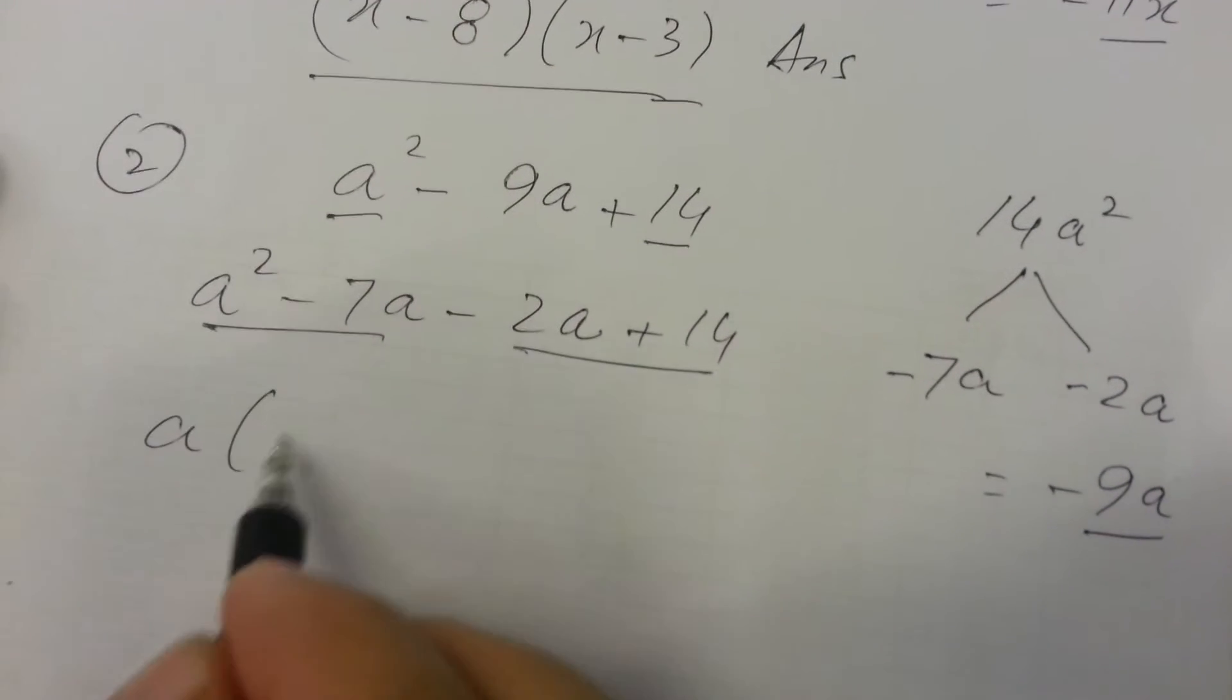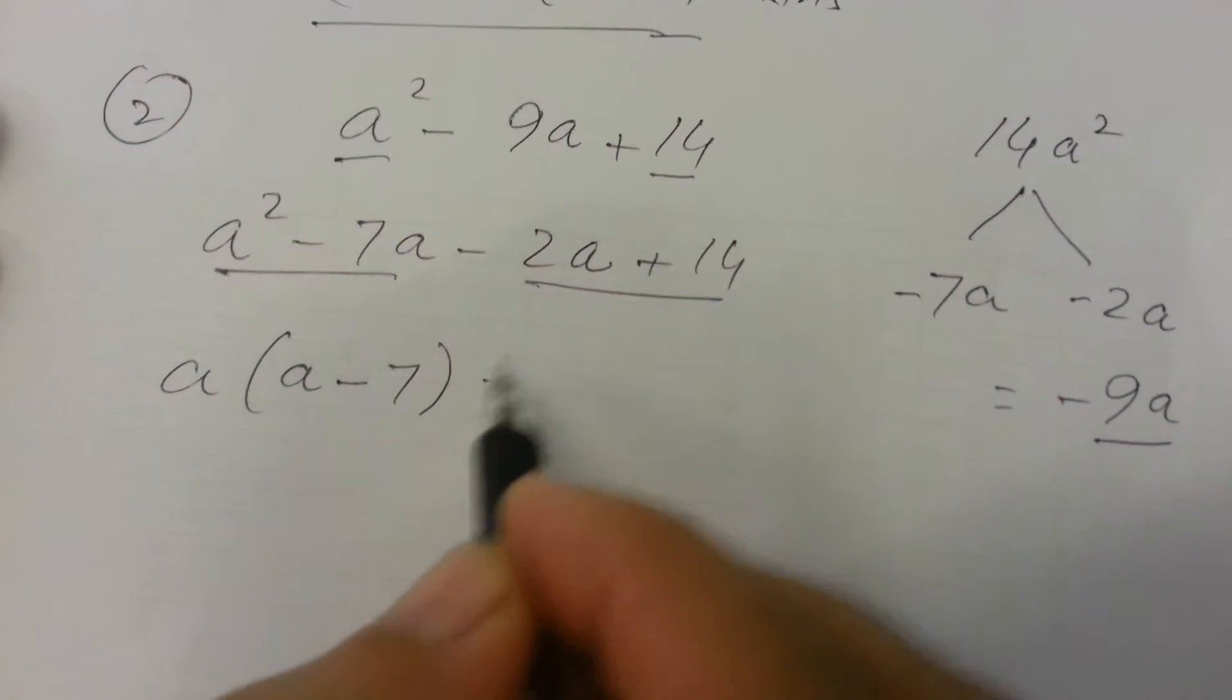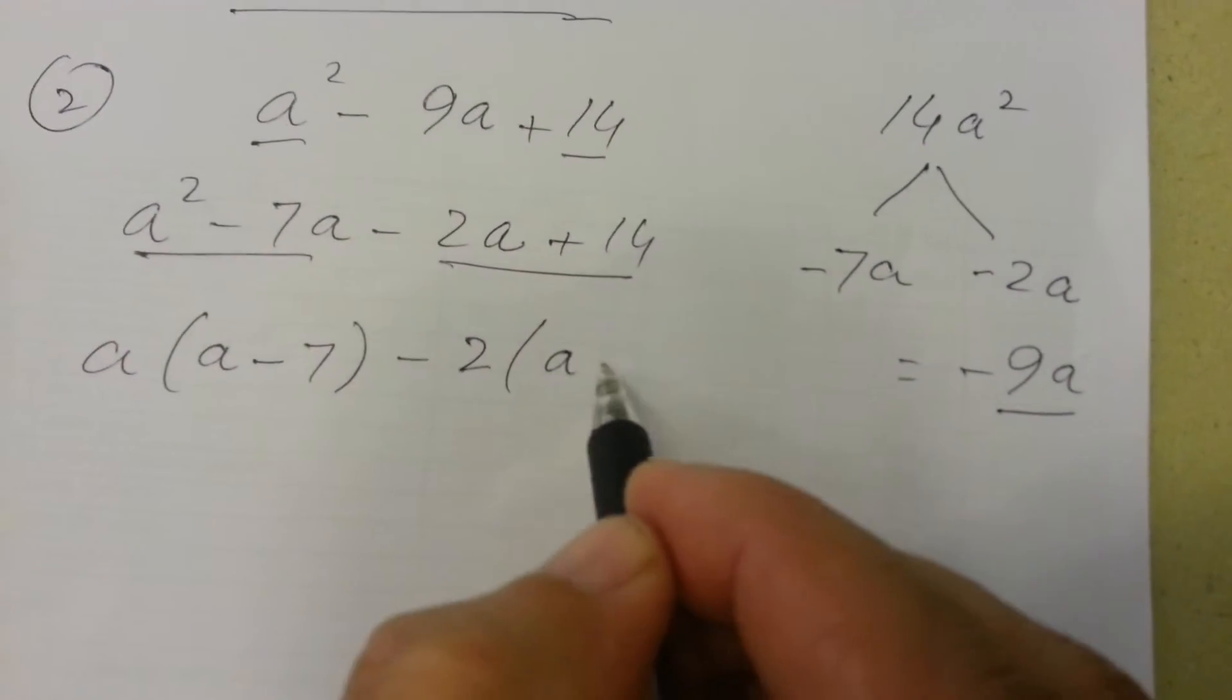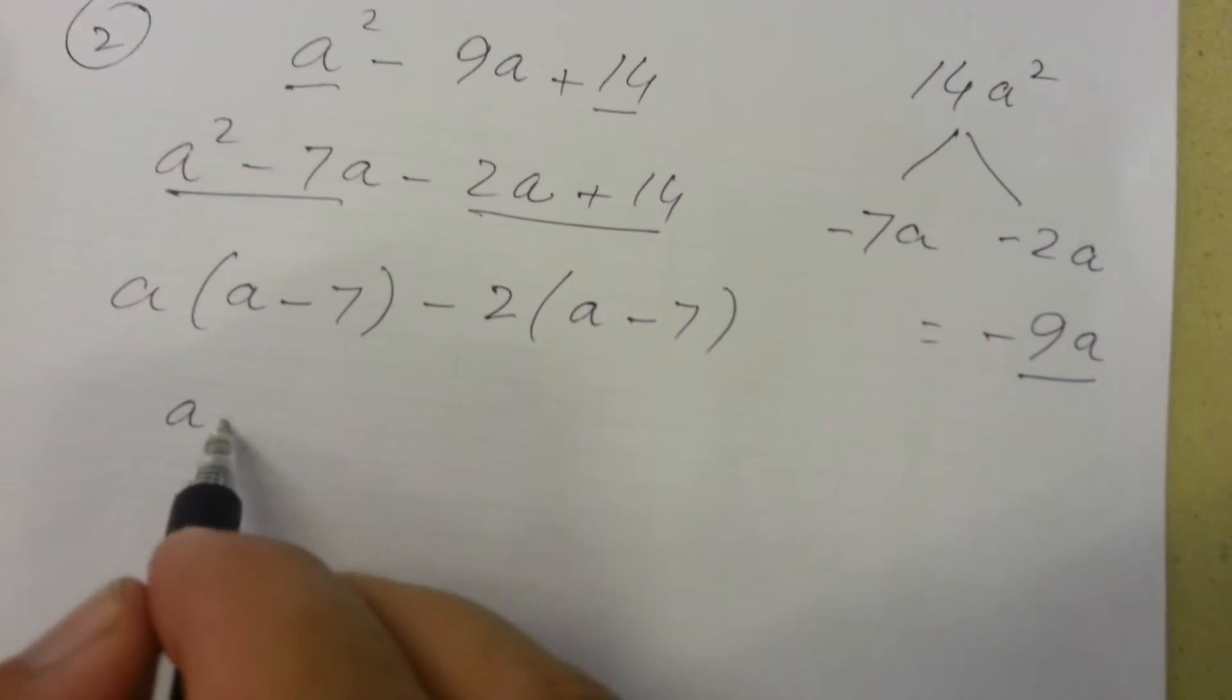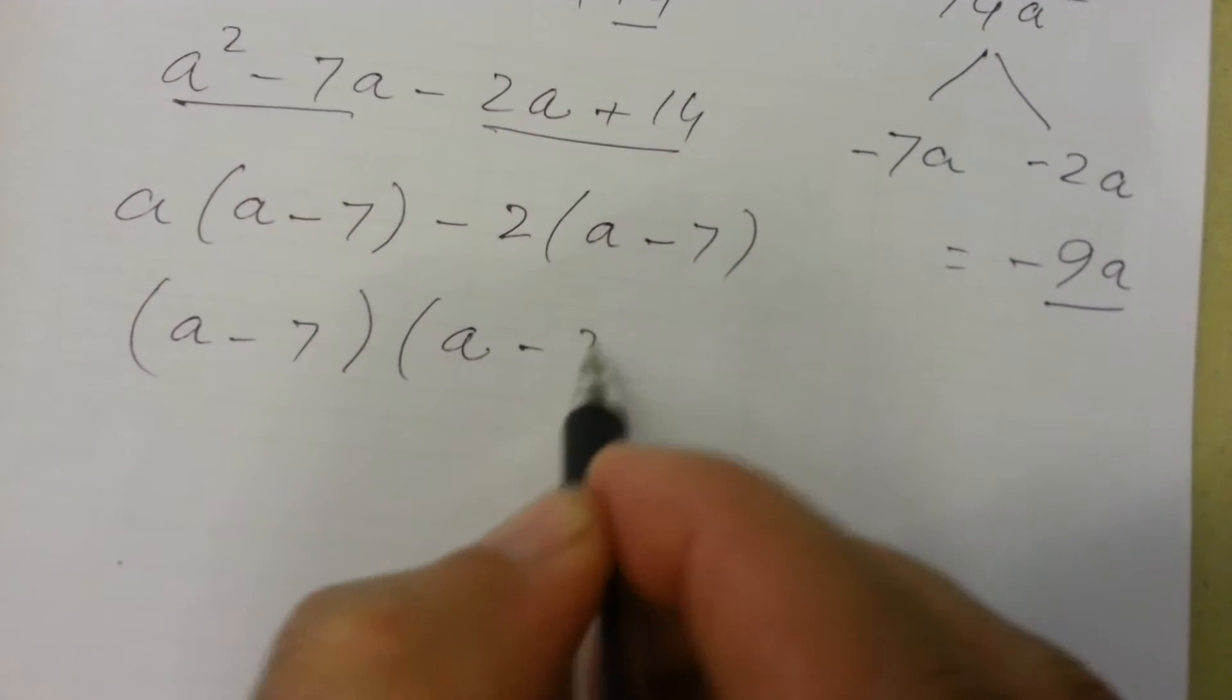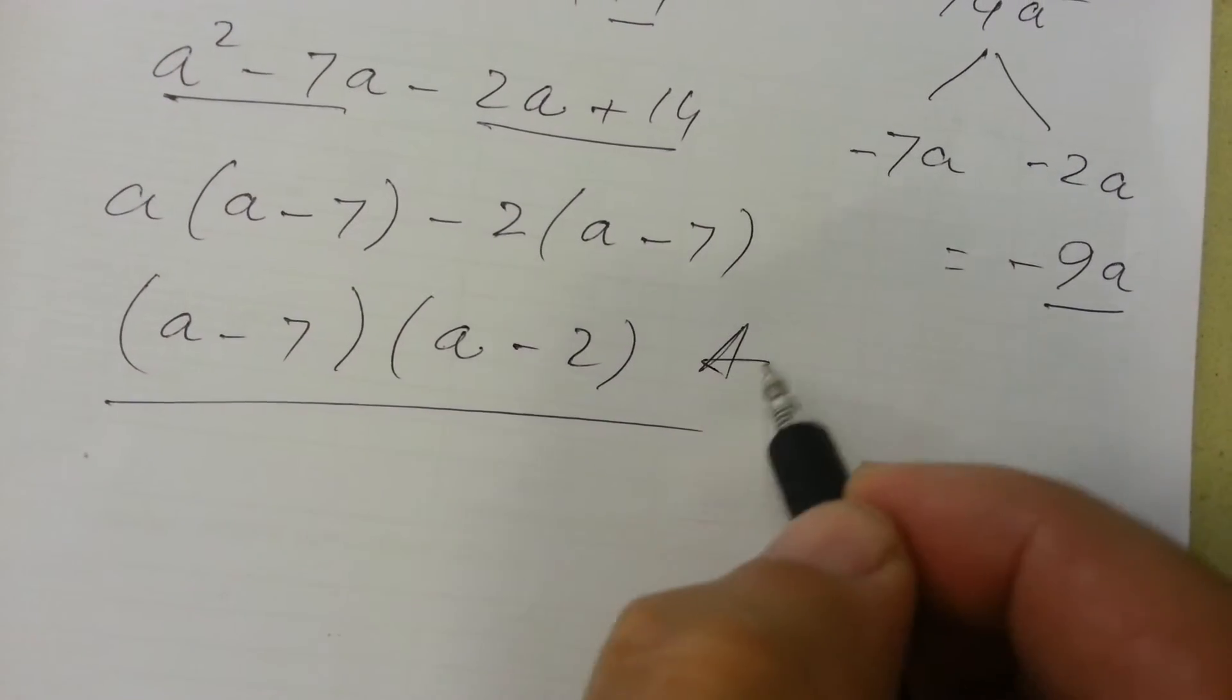Now taking common here a, then a minus 7, then again minus 2. Here will be again a minus 7. a minus 7 is again common and a minus 2. This is the answer.